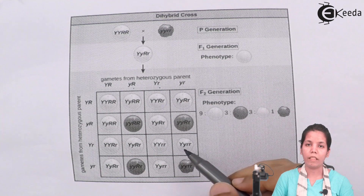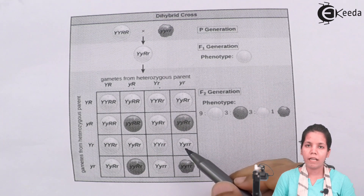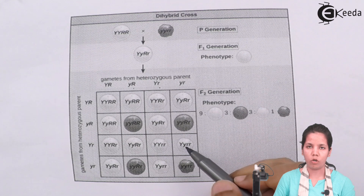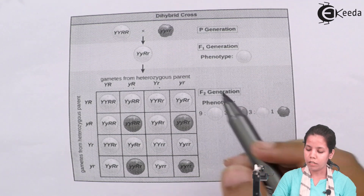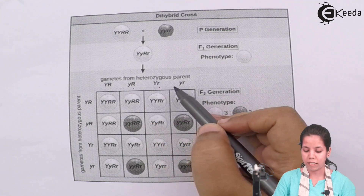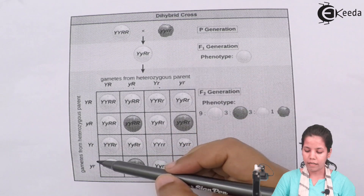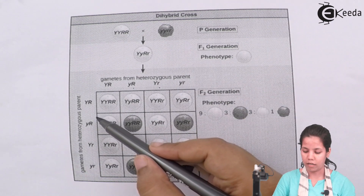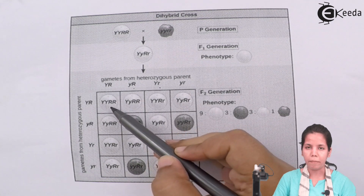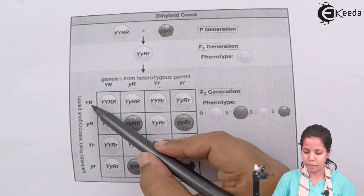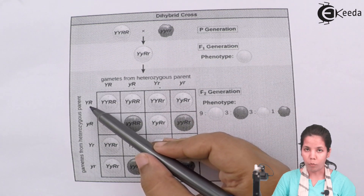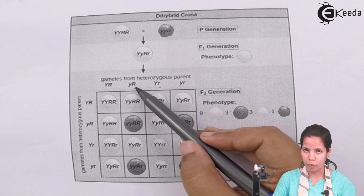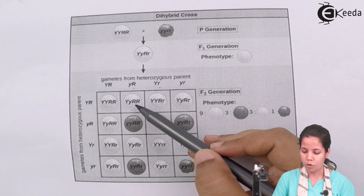For doing a cross, in normal terms we call it a checkerboard, but Mendel did his cross using a Punnett's square. We take the heterozygous parents on one side and the other heterozygous parents on the other side. By simple mathematical calculation — that is, by multiplying — Mendel got his results: multiplying capital Y and capital R with small y and small r, Mendel got capital Y small y, capital R capital R.